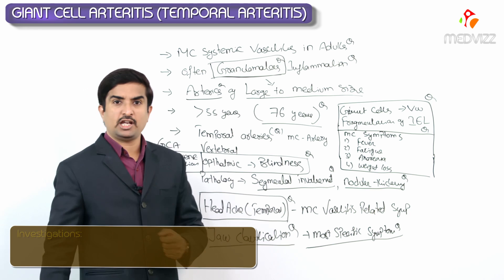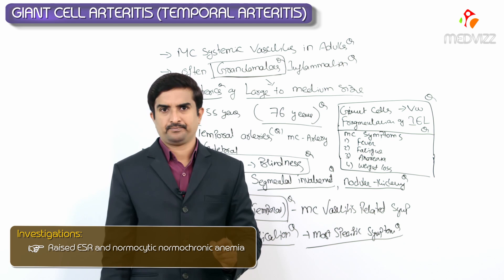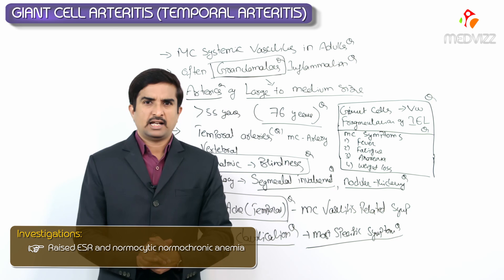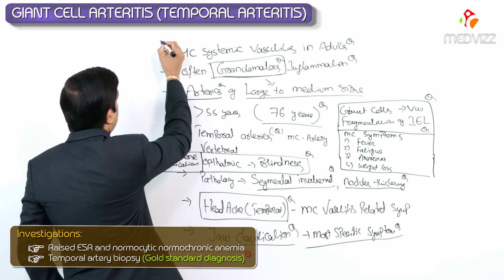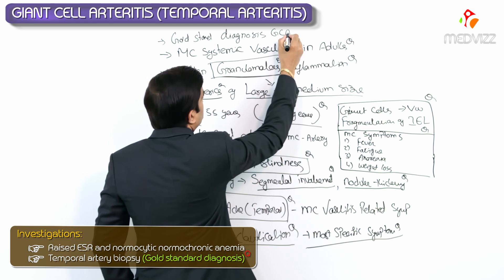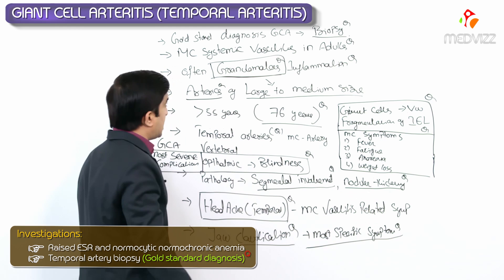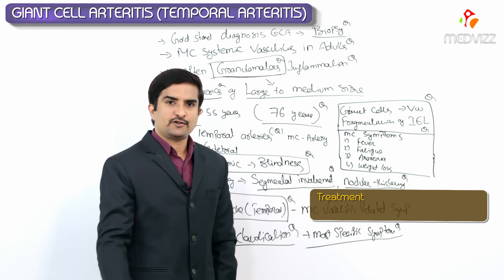Blood investigations in GCA show raised ESR and normocytic normochromic anemia. The gold standard for diagnosis of GCA is biopsy — an MCQ point. The treatment of choice for GCA is corticosteroids.